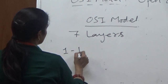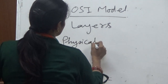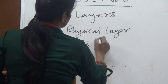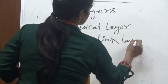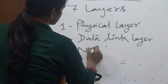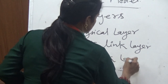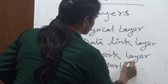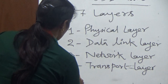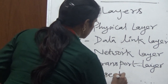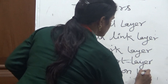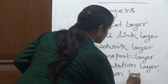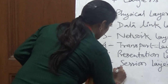The seven layers are: first, the physical layer; second, the data link layer; third, the network layer; fourth, the transport layer; fifth, the presentation layer; sixth, the session layer; and seventh, the application layer.